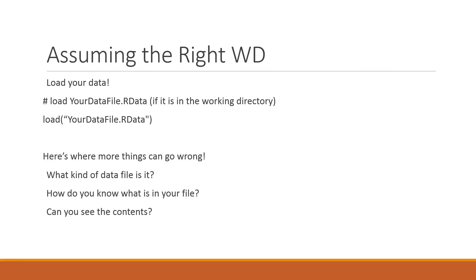Assuming the right working directory is set up, now we're ready to load data. We're going to use the load function. The command looks like: load("name_of_your_data_file") — using the file's name as it appears in your working directory. When you run that, it loads the data into R's reserved memory space and makes it available for you to use.